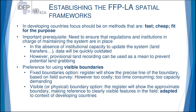An important prerequisite is the need to ensure that regulations and institutions in charge of maintaining the systems put in place the regulatory and institutional systems. Give preference to using visible boundaries. Visible boundaries are registered based on physical elements you can see in nature — it can be trees, it can be a river, any physical elements used to demarcate your land. The fixed boundary option registers based on very precise and accurate boundaries using field surveys.